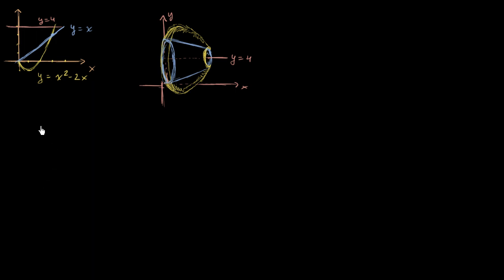Now let's do a really interesting problem. I have y equals x and y equals x squared minus 2x. We're going to rotate the region in between these two functions — that's this region right over here — and we're not going to rotate it just around the x-axis. We're going to rotate it around the horizontal line y equals 4.